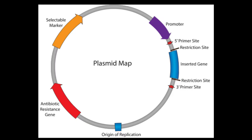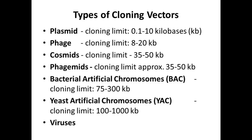First, the plasmids. Plasmids have a cloning limit of 0.1 to 10 kilobases. Cloning limit is the size of foreign DNA that a vector can carry — the size range of foreign DNA that can be carried in a vector. For a plasmid it is 0.1 to 10 kilobases.